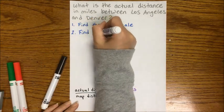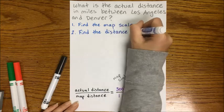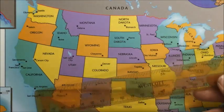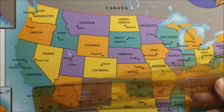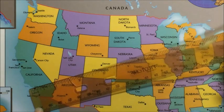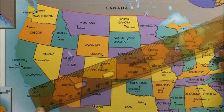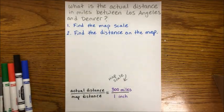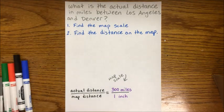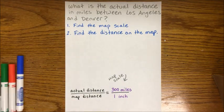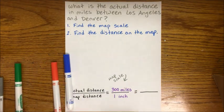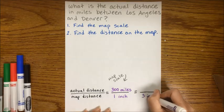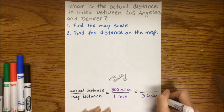Our second step is we need to find the distance on the map between our two cities. So we line up the ruler between Los Angeles and Denver, Colorado, and that shows three inches on our ruler. If we set up an equivalent ratio, our map distance is going to show that three inches that we just measured.